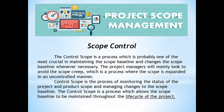Scope control, or control scope, is probably one of the most crucial processes in maintaining the scope baseline and changing the scope whenever necessary. The project manager mainly looks to avoid scope creep, which is a process where the scope is expanded in an uncontrolled manner. Control scope is the process of monitoring the status of the project and the project scope and managing changes to the scope baseline, allowing the scope baseline to be maintained throughout the life cycle of the project.